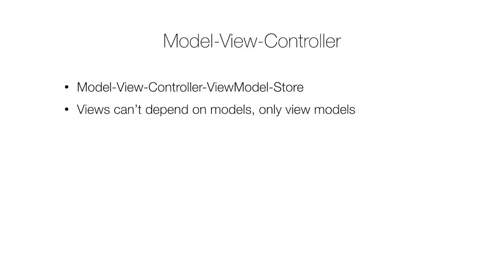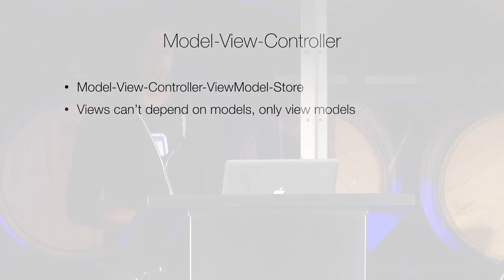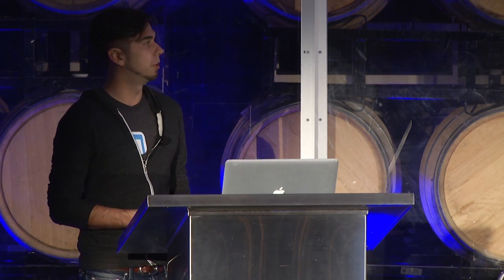And when we say MVC, what we really mean is Model-View-Controller-ViewModel-Store. We picked up this rule that we decided to stick to where views could never depend on models directly. They could only depend on these things that we call view models, which are immutable representations of the data a view needs to show. We do this to encourage the reuse of components.